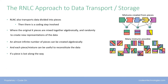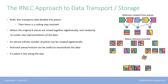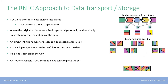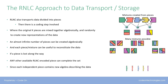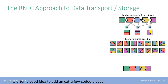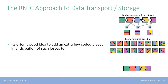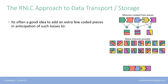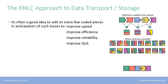If a piece is lost along the way, any other RLNC encoded piece can complete the set, since each independent piece contains new algebra describing the data, which can then be used to solve for and reconstruct the data. It's often a good idea to add a few extra coded pieces to a transmission in anticipation of such losses, which can result in improved speed, improved efficiency, and improved reliability, and better quality of service.